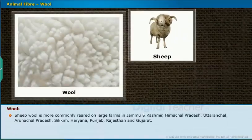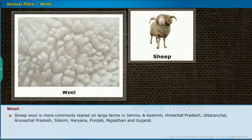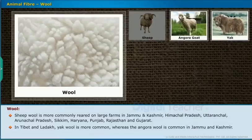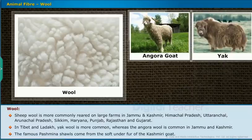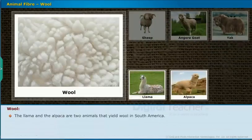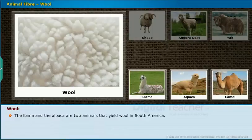Sheep wool is commonly raised on large farms in Jammu and Kashmir, Himachal Pradesh, Uttaranchal, Arunachal Pradesh, Sikkim, Haryana, Punjab, Rajasthan, and Gujarat. In Tibet and Ladakh, yak wool is more common, while Angora wool is common in Jammu and Kashmir. The famous Pashmina shawls come from the soft underfur of the Kashmiri goat. The llama and the alpaca are two animals that yield wool in South America.